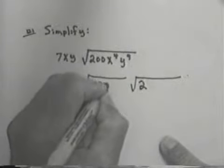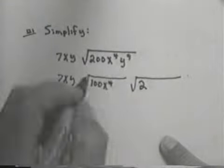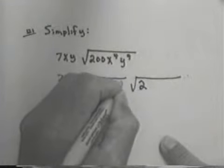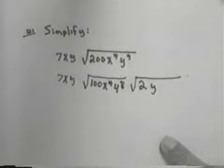x to the 4th is the perfect square. y to the 9th is not, but y to the 8th is. I'm left with y.